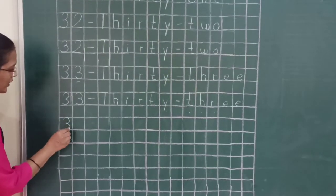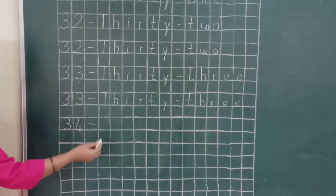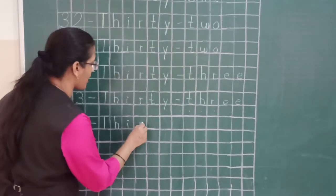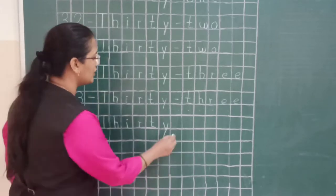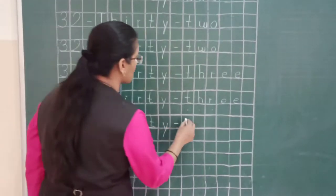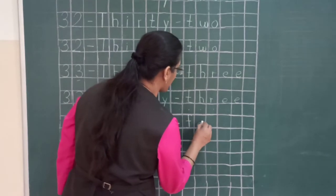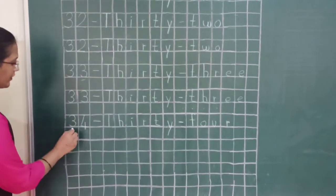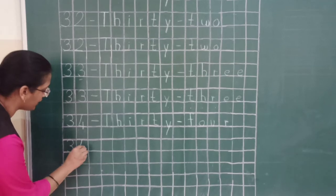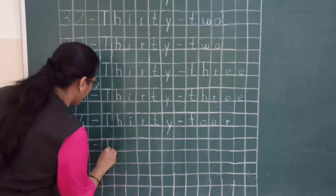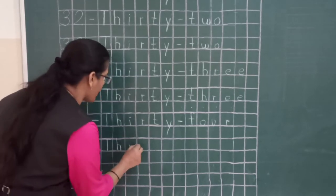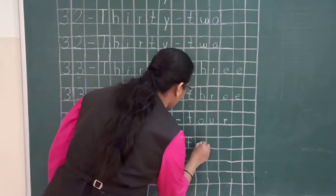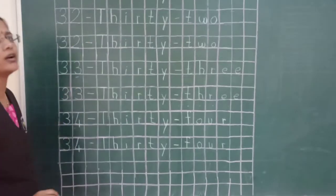Now next number is 34. Again we have to write the spelling of number 34. T-H-I-R-T-Y, 30, then give a dash, and the spelling of number 4 is F-O-U-R, 4. So it is 34. Leave a line. One more time: T-H-I-R-T-Y, 30, and F-O-U-R, 4. So, 34.